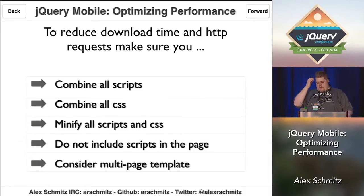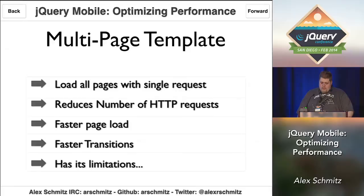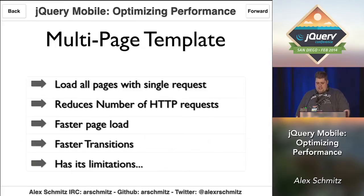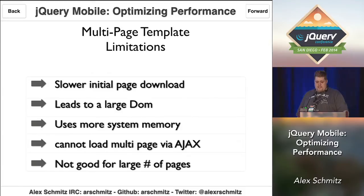To reduce download time and HTTP requests, combine all your scripts and CSS and minify them. Do not include scripts in the actual pages of your jQuery Mobile app — make sure they're all loaded in the head on every page. You can also consider using the multi-page template, which allows you to have all pages in a single HTTP request so you make one request and have everything for the entire life of your app, giving you faster transitions and faster page loads. However, the multi-page template has limitations: that initial download is slower, you can end up with a really large DOM, it uses a lot more system memory, and you can't load multi-page template pages via AJAX in our navigation system.